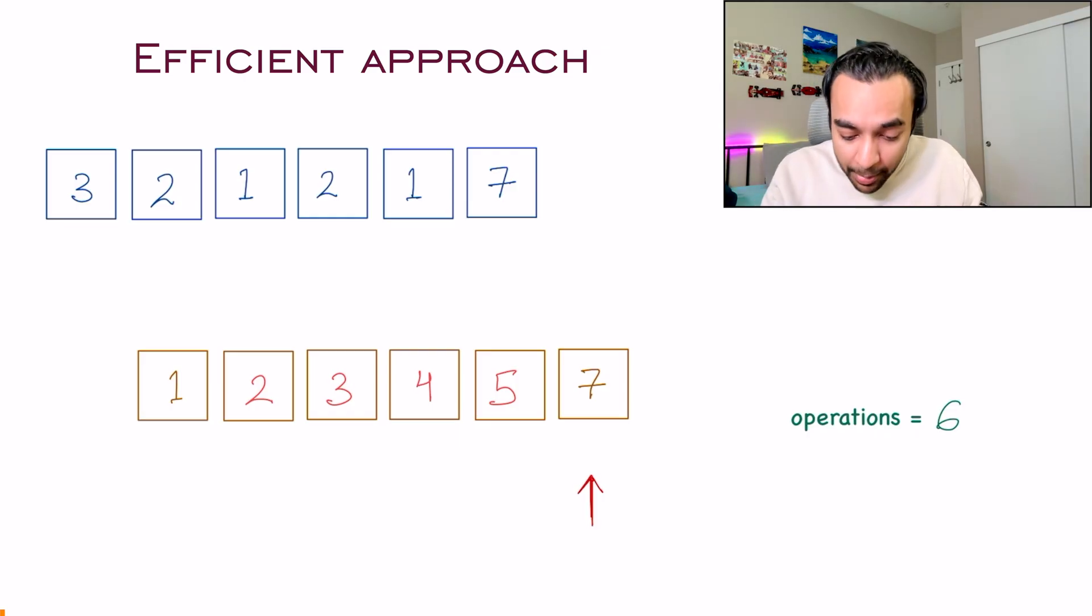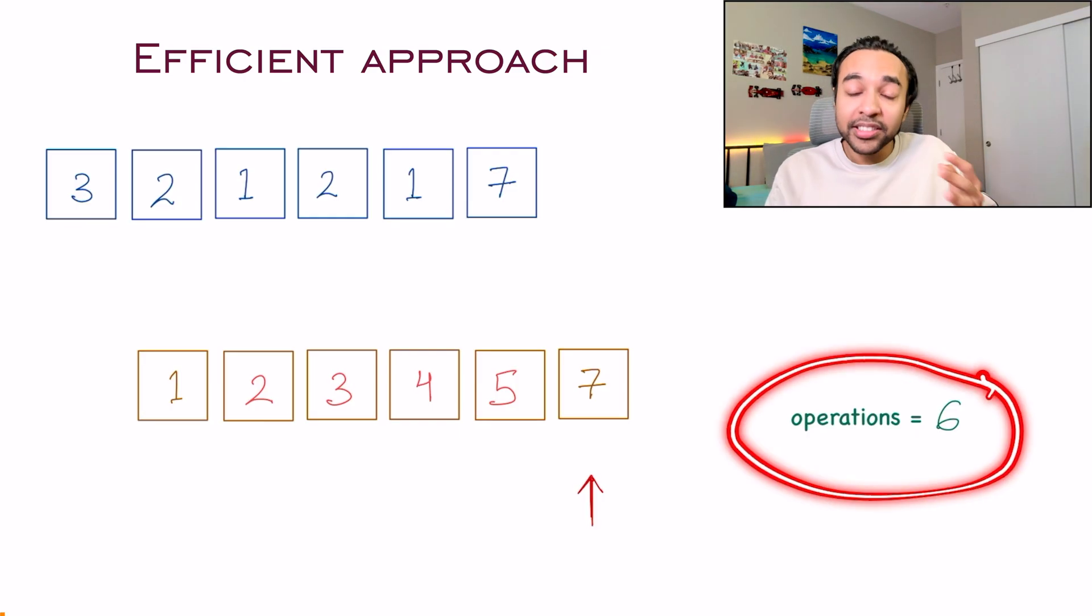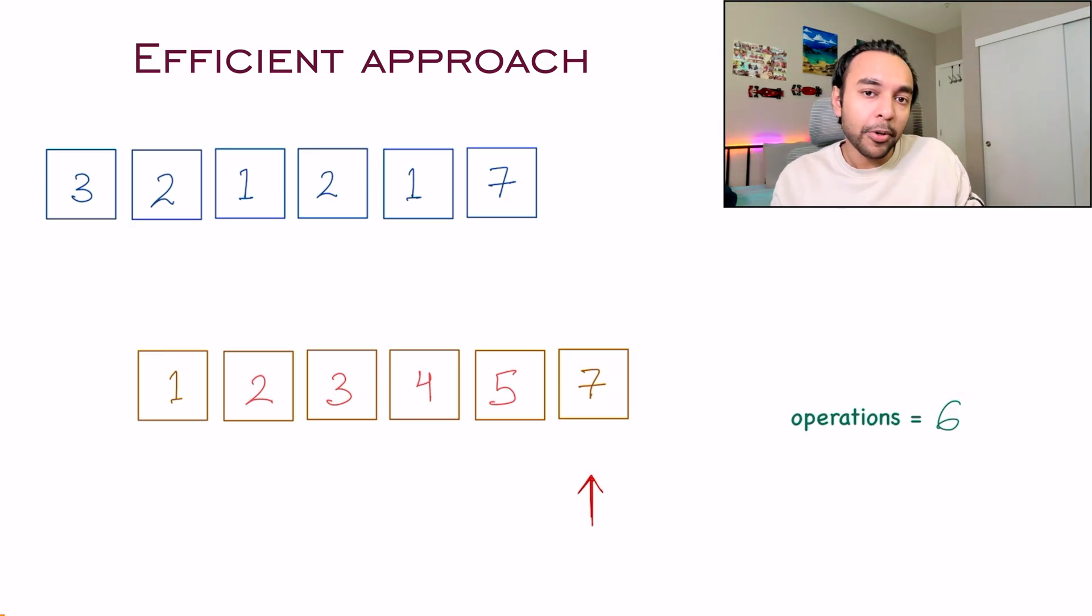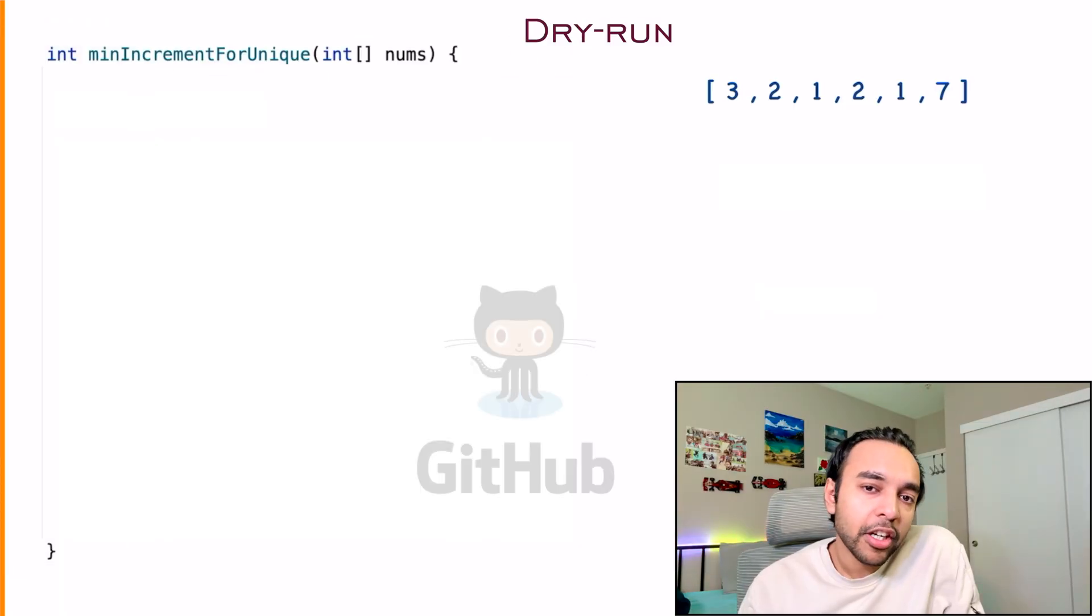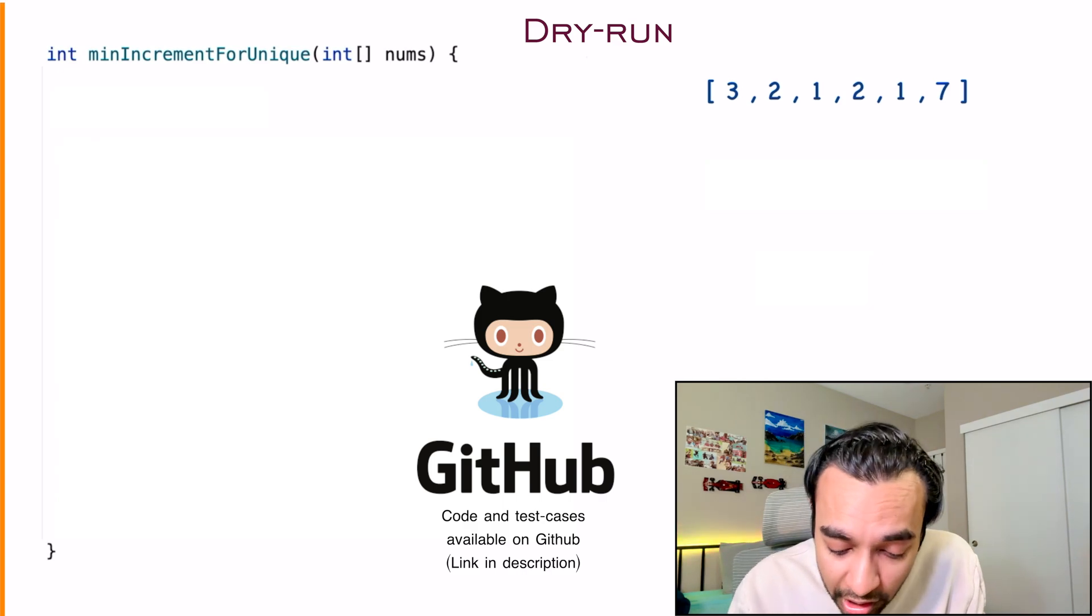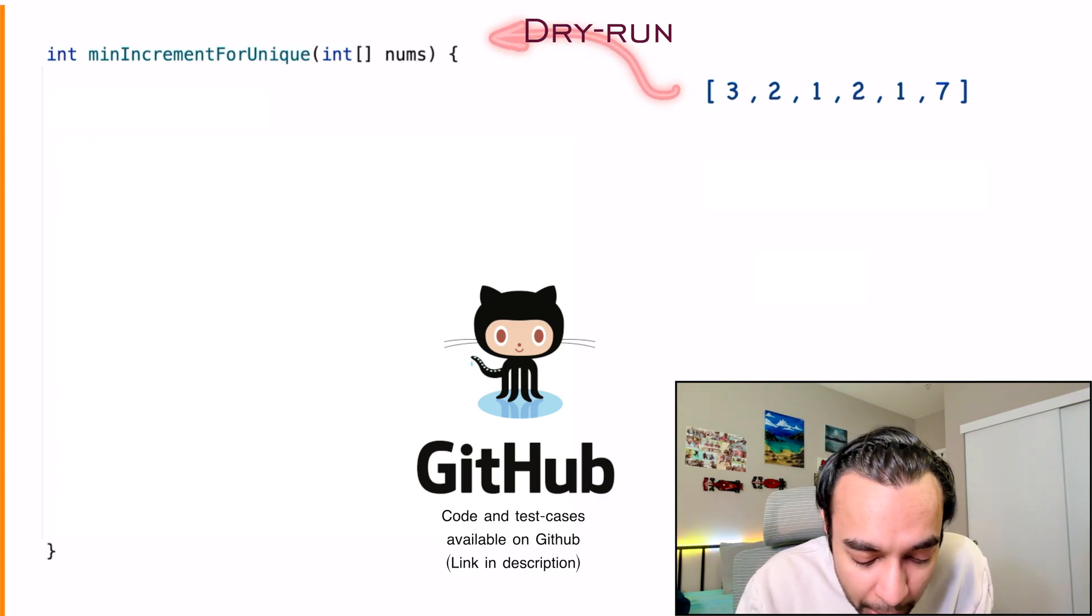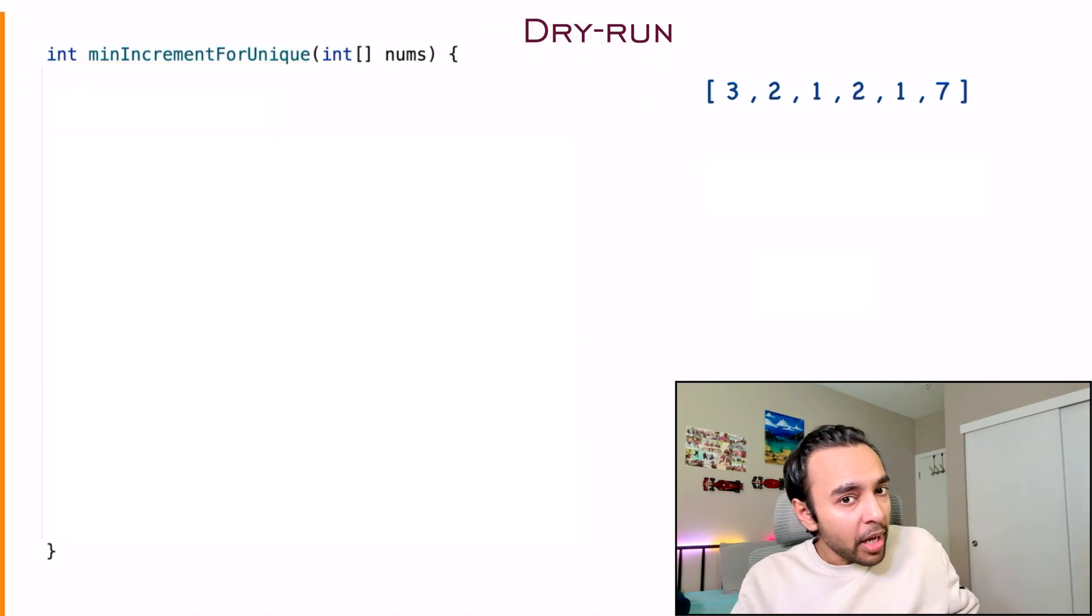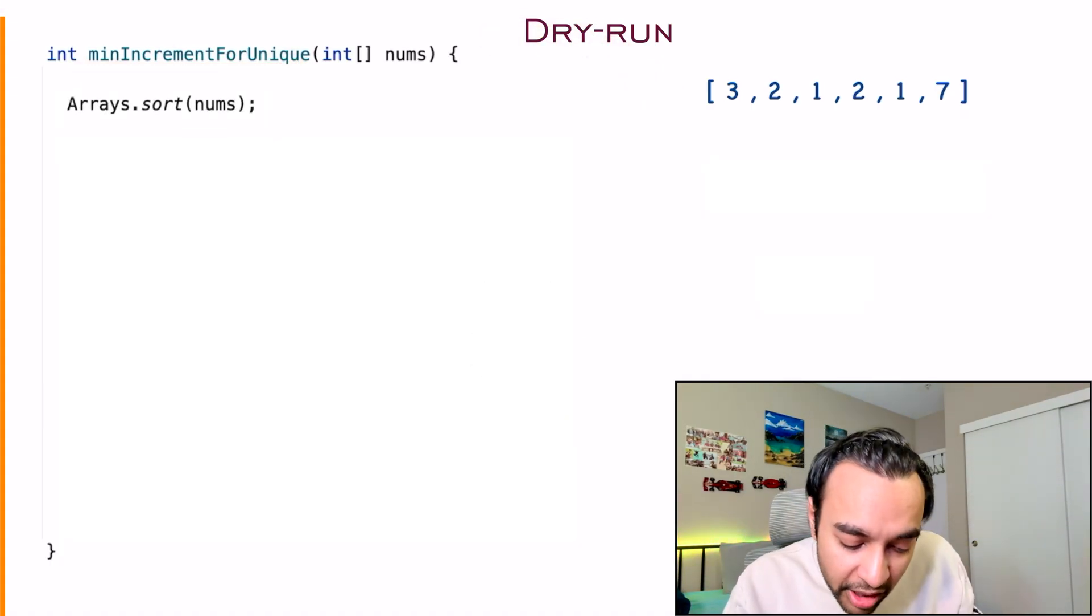At this point in time, my array has ended and I've found the total number of operations that were required to make this entire array unique. Based upon this solution, now let's quickly do a dry run of the code. On the left side of your screen, you'll have the complete code to implement this solution. And on the right, I have this sample array that's passed in as an input parameter to the function minIncrementForUnique.